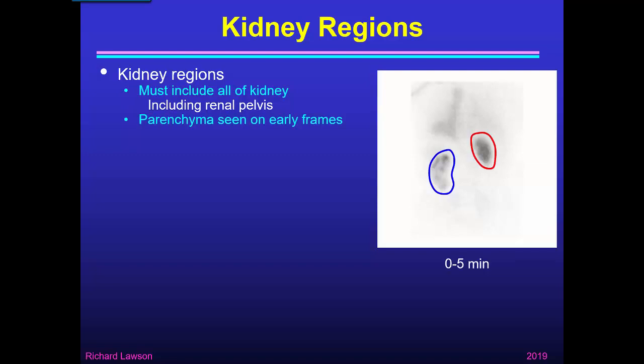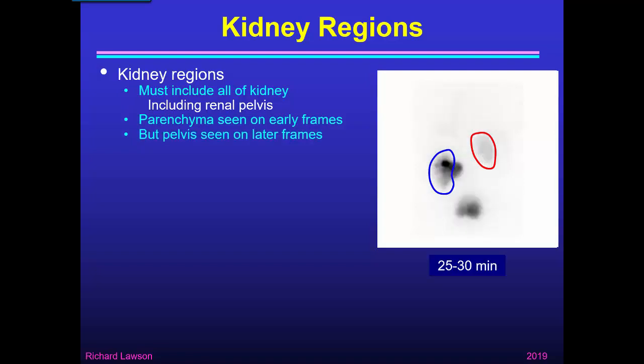If we look at an early image — here a summed frame of 0–5 minutes — we can see the radiopharmaceutical in the parenchyma and functioning tissues of the kidney. We can easily draw a region of interest in blue around the left kidney and in red around the right kidney. But if we look at a later frame, here 25 to 30 minutes, urine has moved into the renal pelvis. In the left kidney the pelvis is quite dilated and has extended medially out of the original region drawn, so we have to edit that region to extend it to include all of the renal pelvis.